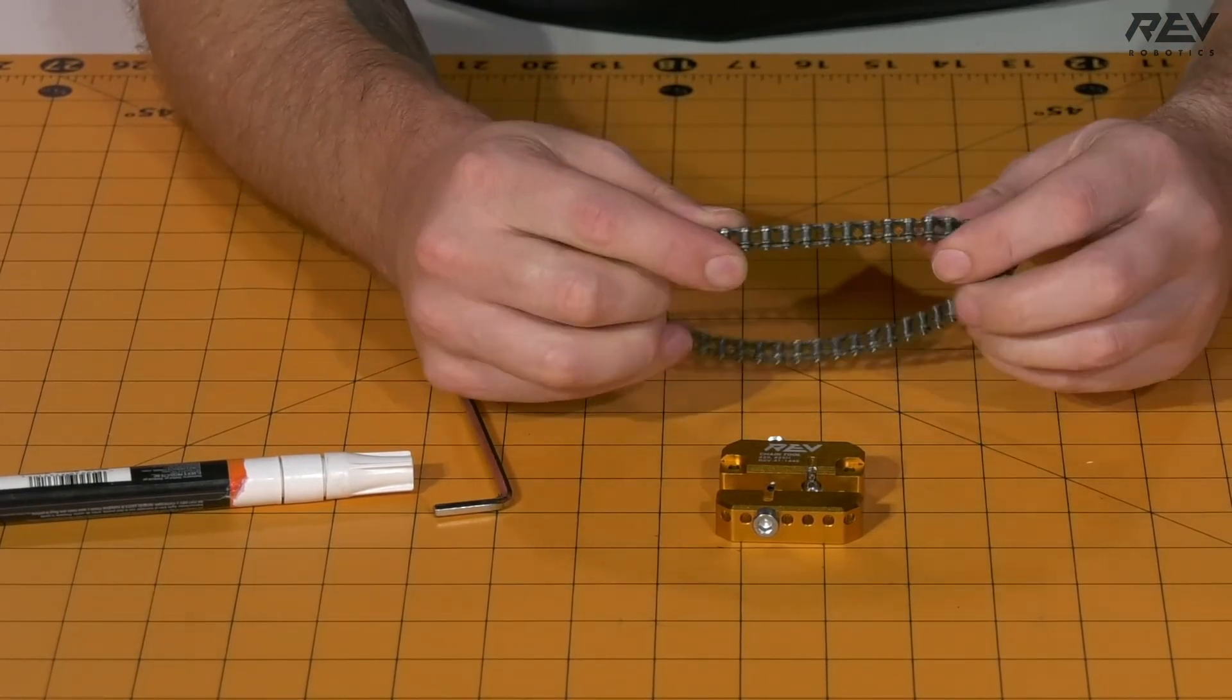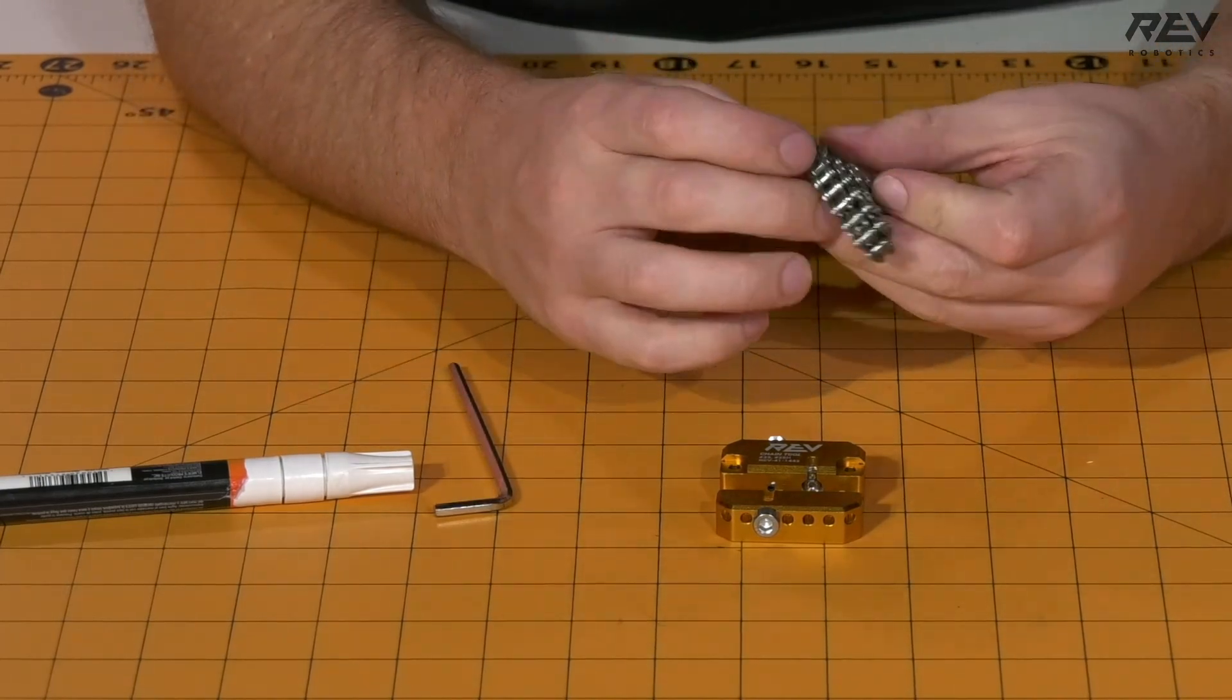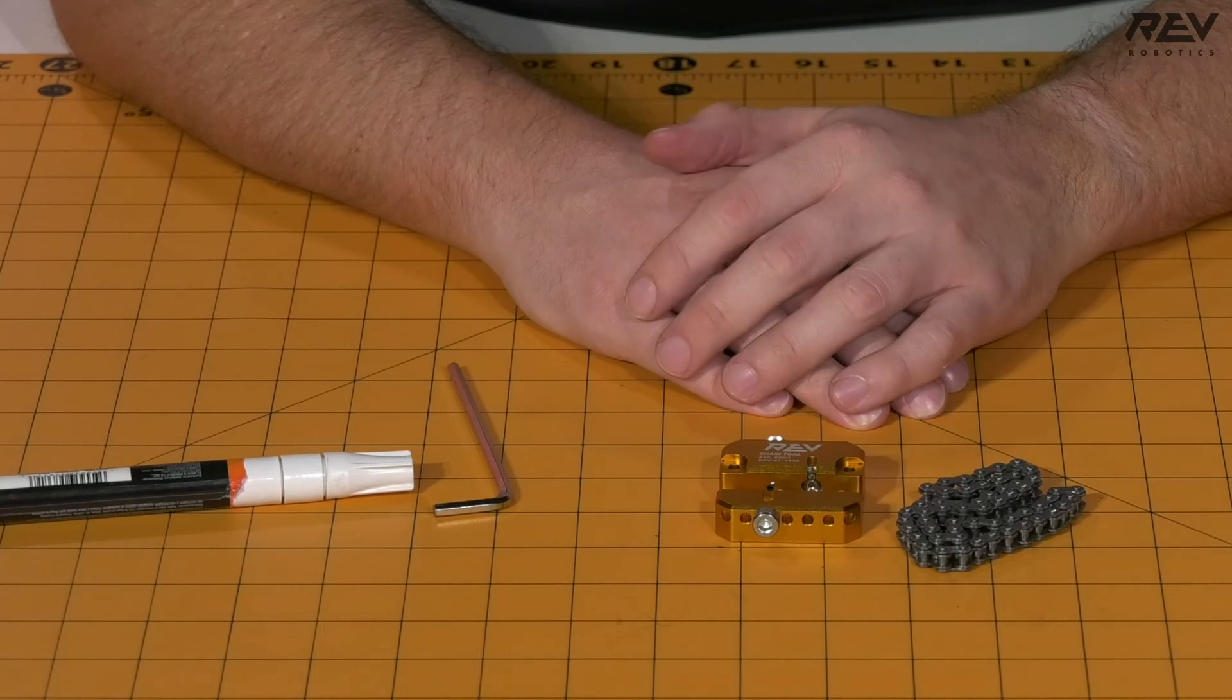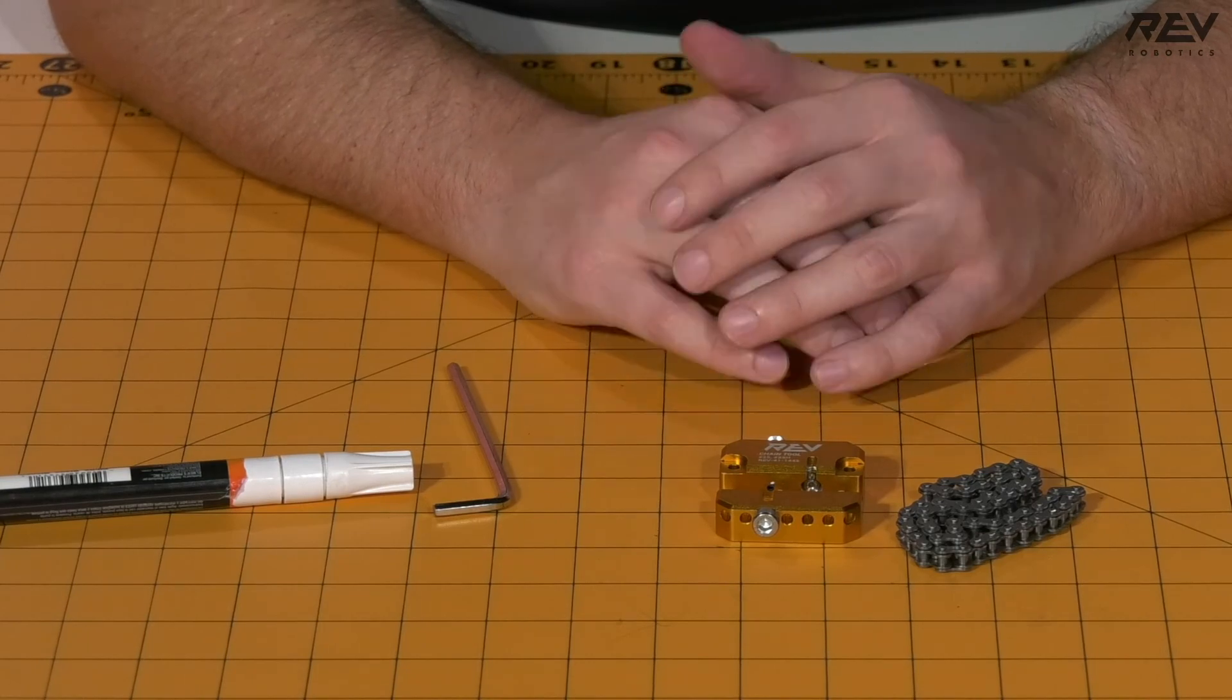You just need to repeat this step three more times to end up getting four total links of chain, and you'll be good to go for the rest of this build.